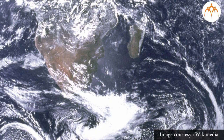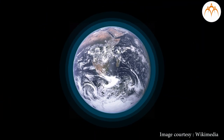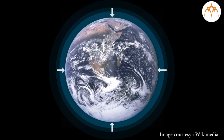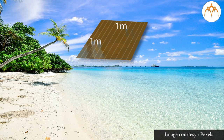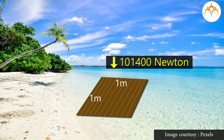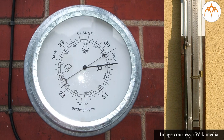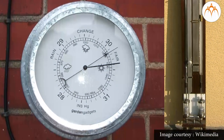What is the atmosphere? A covering of layers of air around the earth is called the atmosphere. The air around us exerts pressure on us as well as the earth. This pressure exerted by air on the earth's surface is called atmospheric pressure. If you take a square cardboard of 1 meter side at sea level, the air will exert a force of 1,1400N on it. That is, the atmospheric pressure at sea level is about 1,1400N per square meter. The instrument used to measure atmospheric pressure is called a barometer.